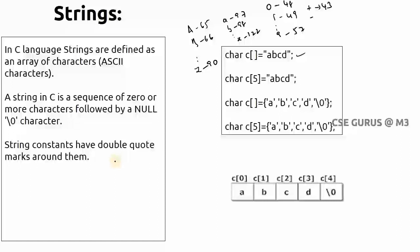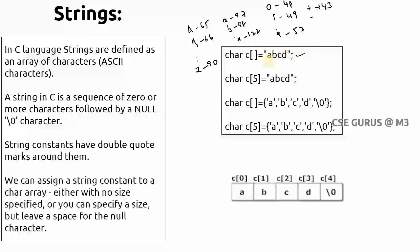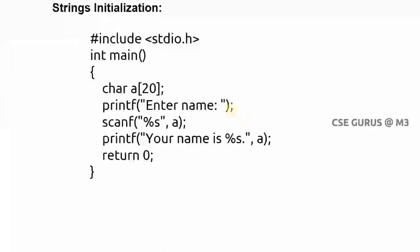A string constant has double quote marks around it. You can assign a string constant to a character array either with no specified size, or you can specify a size but leave space for the null character. These are the basic ways to represent and initialize a string in C.